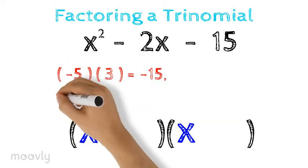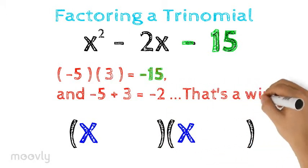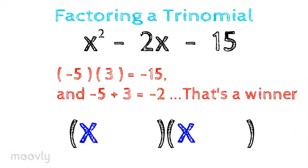Negative 5 times 3 is negative 15, and negative 5 plus 3 is negative 2. Winner, winner, chicken dinner! This means that negative 5 and 3 get to join the x's in the big show.